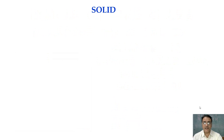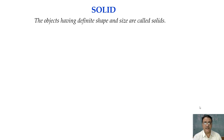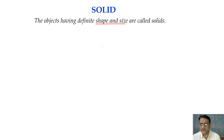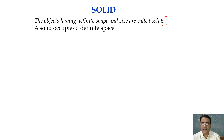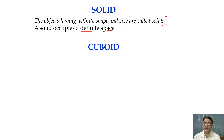Let us start with solids. Objects having definite shape and size are called solids. A solid occupies a definite space. You have already studied three types of solids — three types of 3D shapes in class 8 — that is cuboid, cube, and cylinder. These three solids are going to repeat.